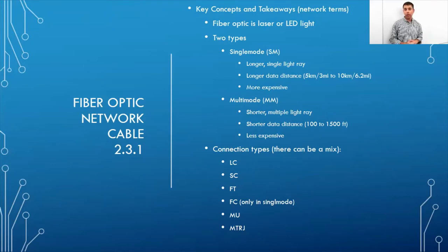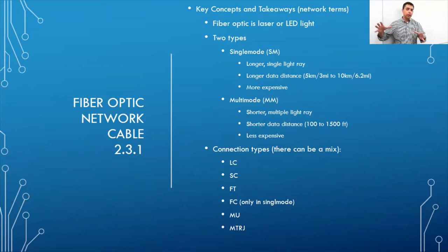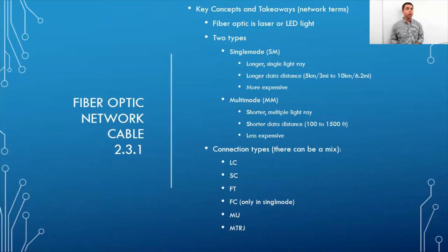Multi-mode can travel between 100 to 1,500 feet, while Cat 6 cable maxes out at 100 meters (about 330 feet). Single mode can go roughly 5 kilometers (3 miles) to 10 kilometers (6.2 miles). Single mode is ideal for connecting buildings on a campus; multi-mode is often used between floors or for patching switches together.